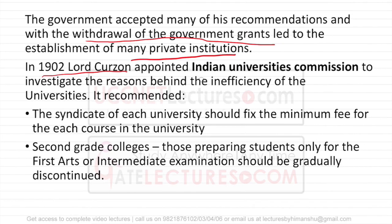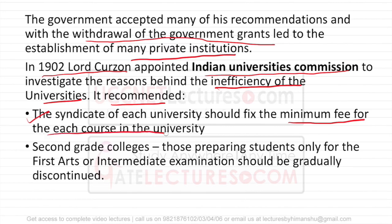In 1902, Lord Curzon appointed the Indian Universities Commission, basically because he was not satisfied with the working of universities and wanted to improve their efficiency. This commission recommended that the syndicate of each university should fix the minimum fees for each course — fees should be standardized and not change arbitrarily year to year. It also recommended that second-grade colleges, which only prepared students for fine arts or intermediate examinations, should be discontinued.